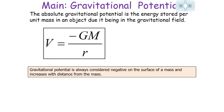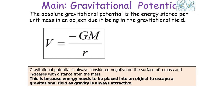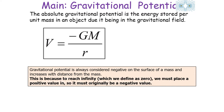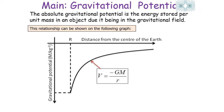Gravitational potential is always negative on the surface of a mass and increases (becomes less negative) with distance. This is because gravity is always attractive — energy must be put into an object to escape a gravitational field. To reach infinity (potential = 0), you must input a positive value of energy, so gravitational potential must be negative. We can also look at the relationship between gravitational potential and distance from the centre of mass by using tangents to find the gradient at any point.